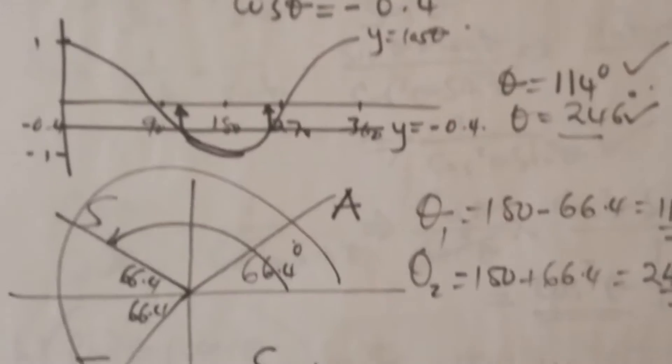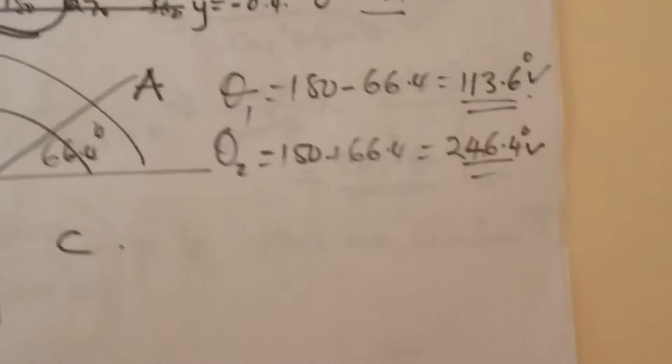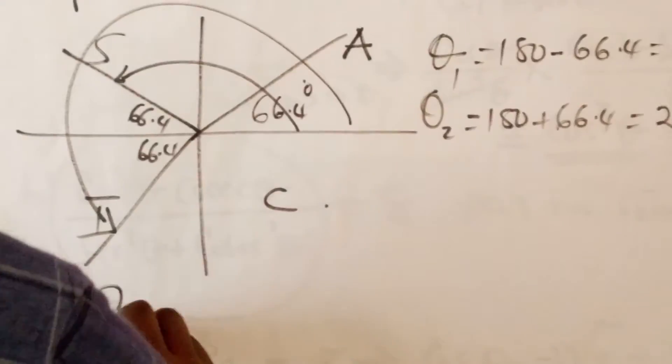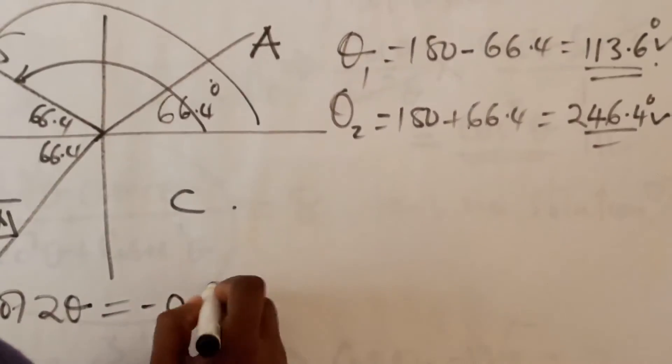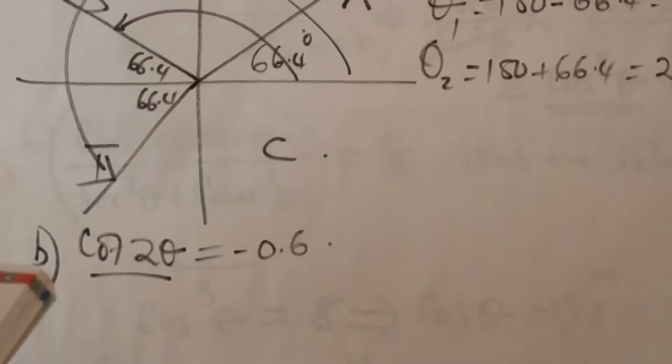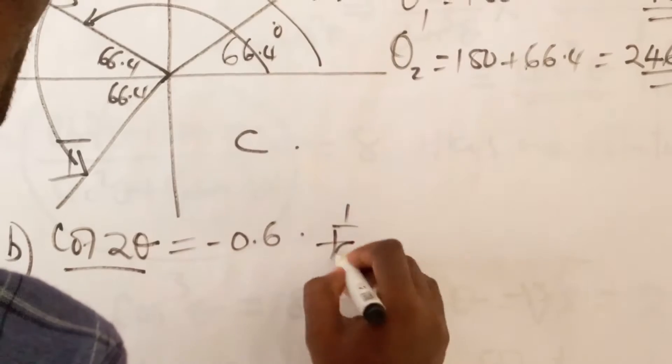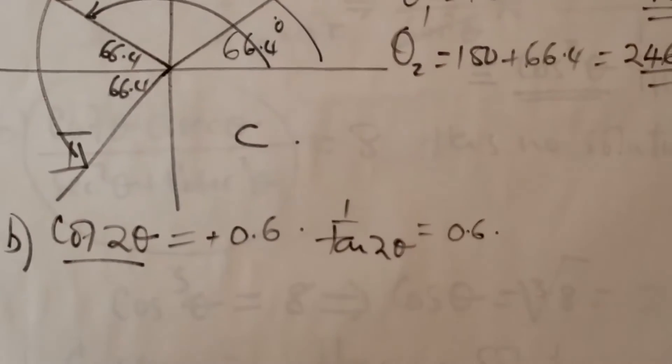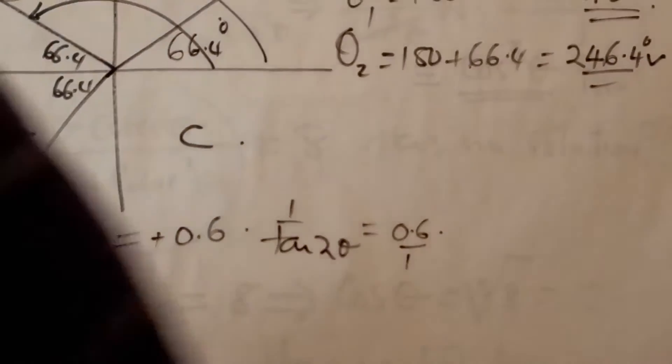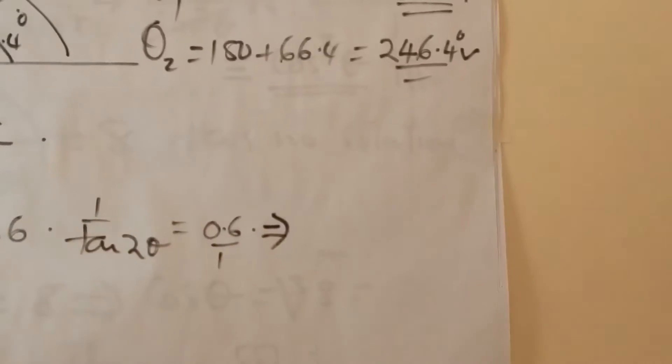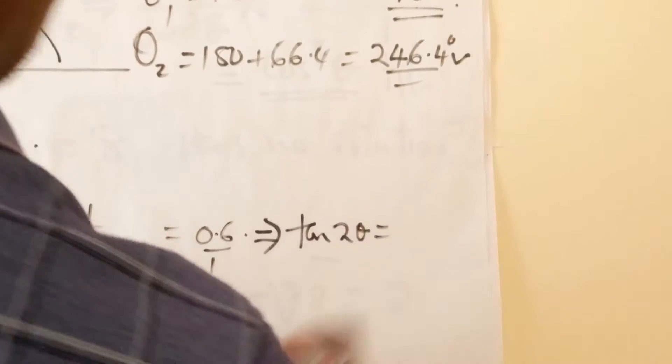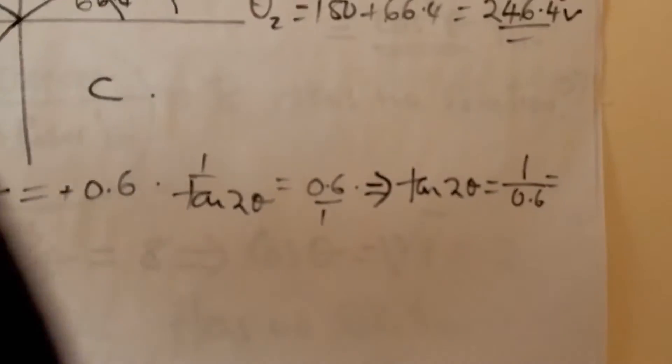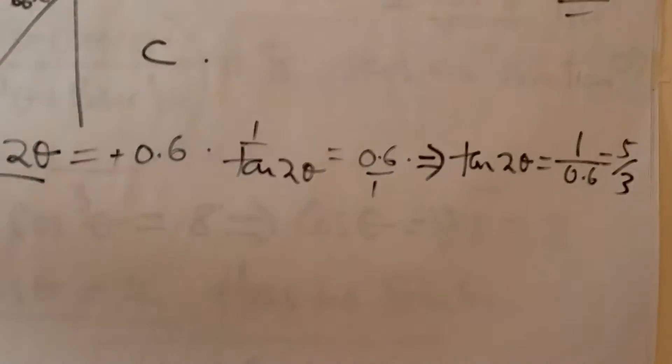But it is part B that we need to consider in a very special way. Part B is talking about the cot of 2 theta equals negative 0.6. Likewise, this is a secondary trigonometric ratio, which gives us 1 over the tangent of 2 theta equals negative 0.6. The tangent of 2 theta is 1 over 0.6, which is 10 out of 6, which is 5 out of 3.